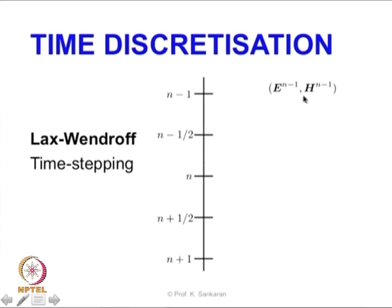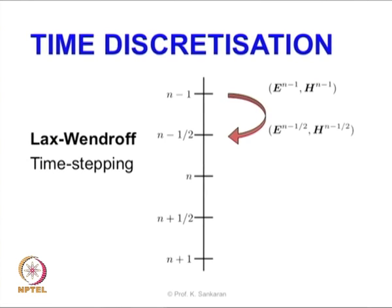The difference is that our E and H fields are located at the same point, which is very different from the finite difference method. In the finite difference method, the E field is at one point and the H field is at another. In finite volume, the fields are co-located. When they are co-located, we can compute the half time step for both E and H simultaneously and use this value to improve our guess for the next step.